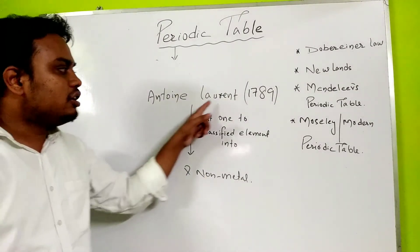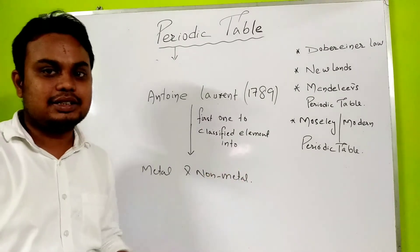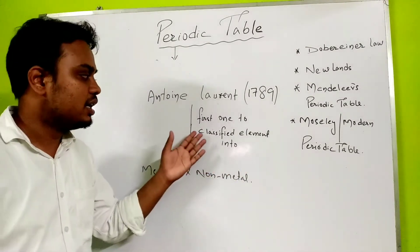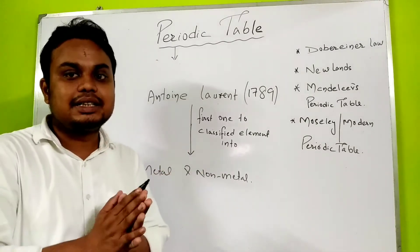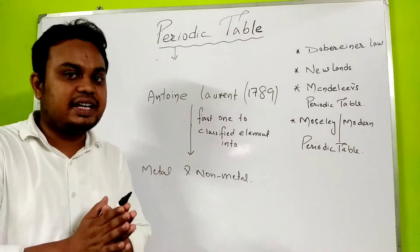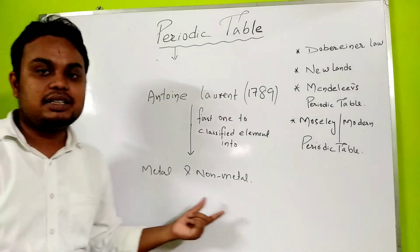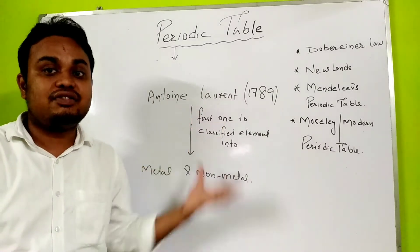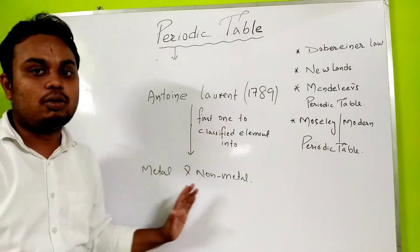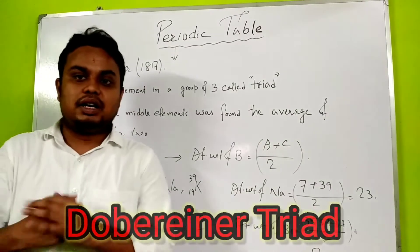When this process started, the first was Antoine Lavoisier, a scientist in 1789. He was the first to classify the elements and present them as two different types: metals and non-metals.